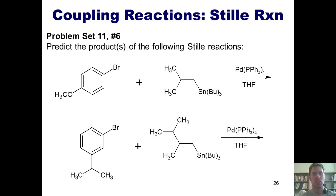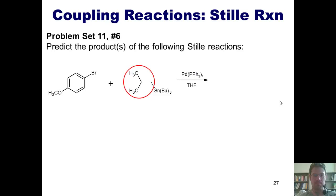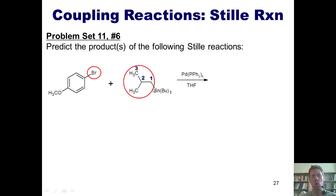In our first example, I've got this aryl bromide reacting with this stannane. BU is an abbreviation for butyl. I've always got this tributyltin group attached to some other group — whatever the other group is ends up replacing the halogen. The other group attached to my tin is this whole group right here, and the halogen is located right here. I've numbered the carbons in the other group as 1, 2, and 3. When I react these two molecules in the presence of palladium-tetrakis-triphenylphosphine in THF solvent, I end up replacing the bromine with the whole group attached to my tin, giving me this product with carbons numbered 1, 2, and 3.